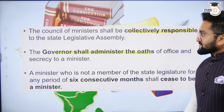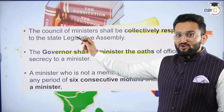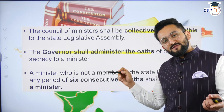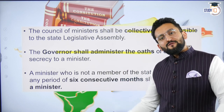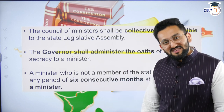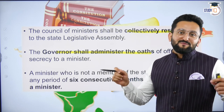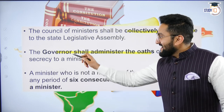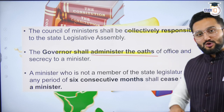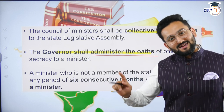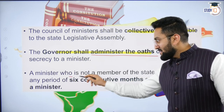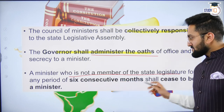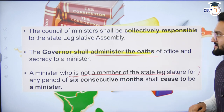91st Amendment Act. The Council of Ministers shall be collectively responsible to — if a no-confidence motion is passed, then the whole Council of Ministers has to resign. The Governor shall administer the oath — so the Governor gives oath to these ministers. A minister who is not a member of the state legislature can be there for six months.